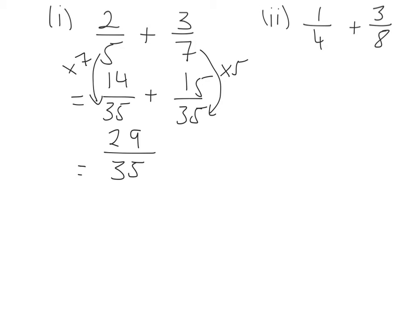So therefore, my answer is 29 over 35. As the numbers don't divide into each other, we are going to leave it like that.